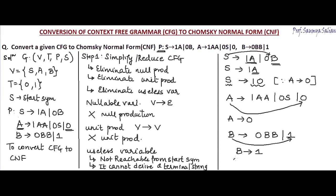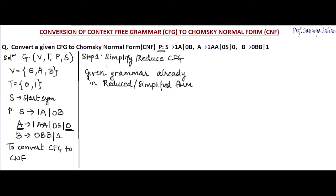So there are no useless symbols, and my grammar is already in reduced form. After checking all three conditions, the given grammar is already in reduced or simplified form. Now Step 2 is to check whether the production rules are already in CNF. If not, I have to create new variables for substitution such that the new variables are in CNF.